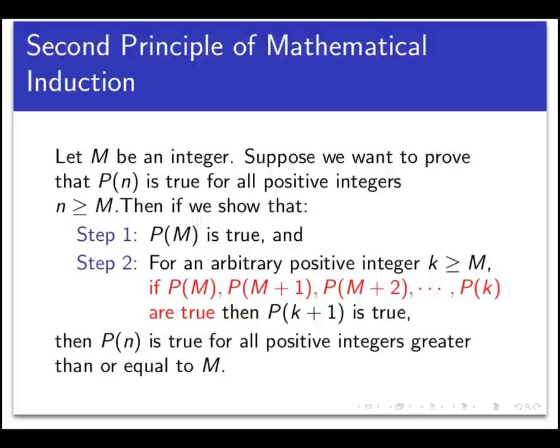Then, we assume that P is true for all the integers between m, the base case, and some integer k. So again, we're assuming not only that P of k is true, but P is true for every integer between the base case and k. If you make that assumption and then go on to prove that P of k plus 1 is true, then P will be true for all integers n greater than or equal to m.